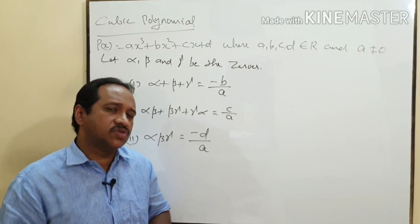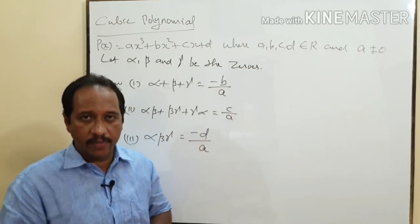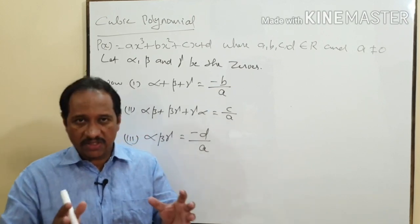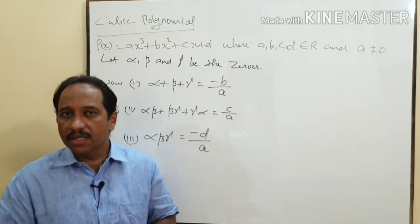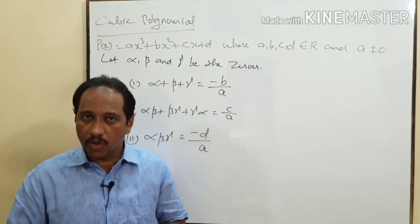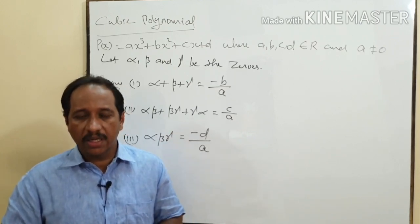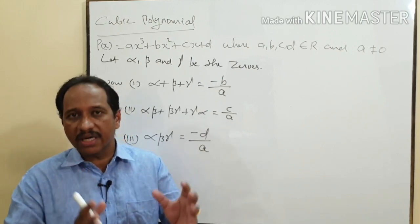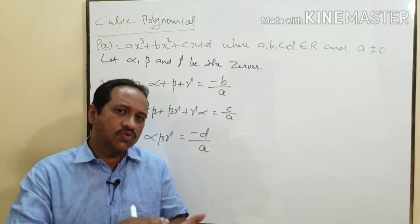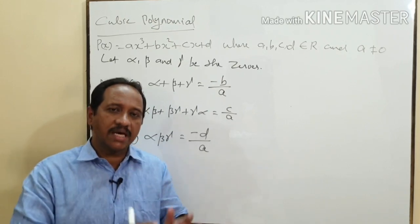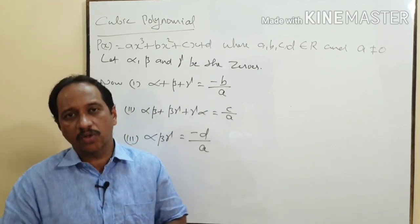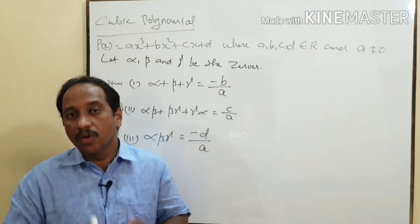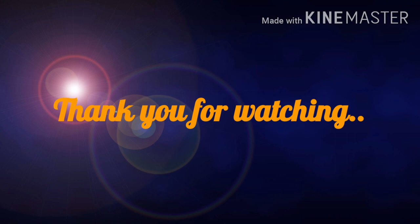The examples and questions related to cubic polynomials we will do on some other occasion. I hope you understood the relationship between the coefficients and zeros of a linear polynomial, quadratic polynomial, and cubic polynomial. I have also explained how to form a quadratic polynomial when the two zeros or their sum and product are given. I hope today's video is very useful for all of you.